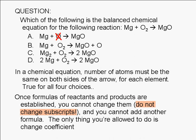Choice C is also wrong. Here the subscript of magnesium was changed. You're also not allowed to add the formula of another substance. Therefore, choice B is wrong.